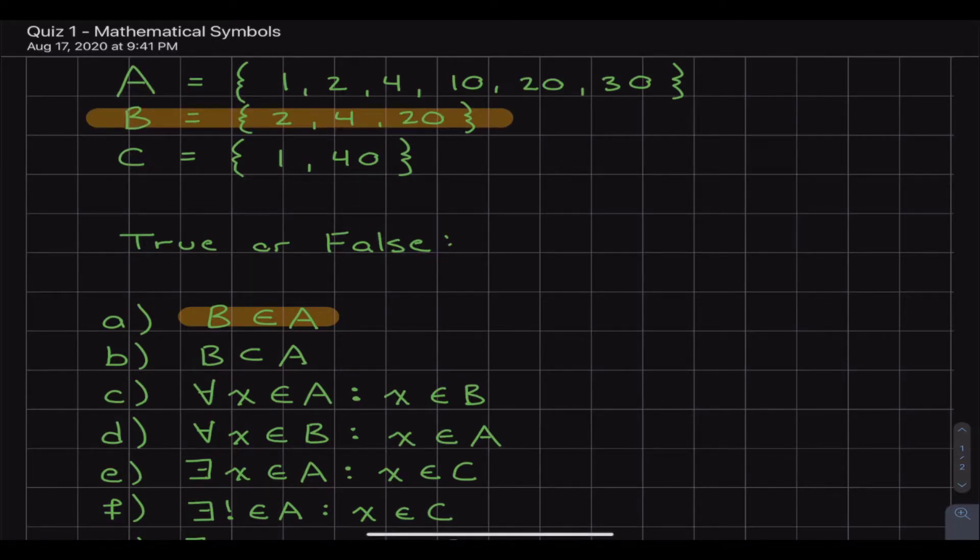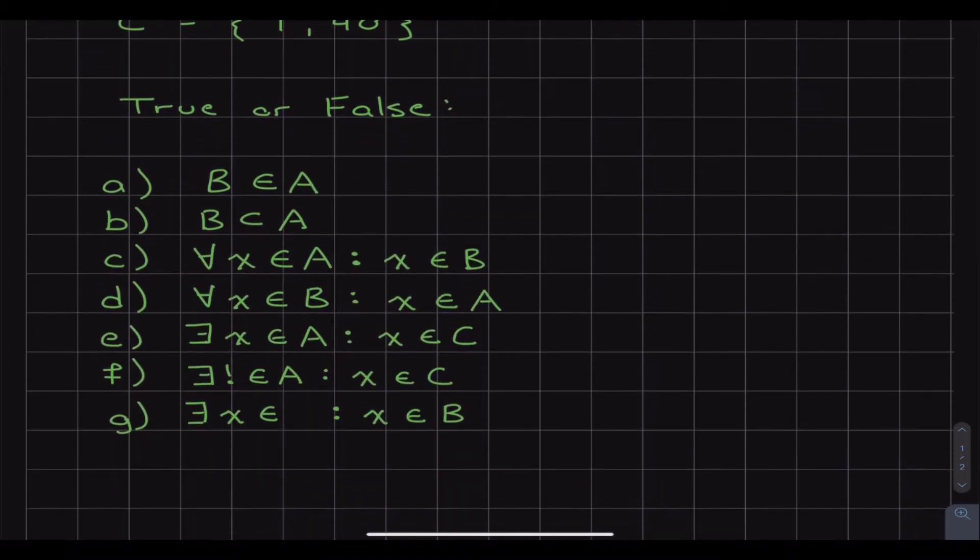So calling B an element would actually be incorrect. So this statement right here, because B is a set and not an element, this one right here is just straight up going to be false.